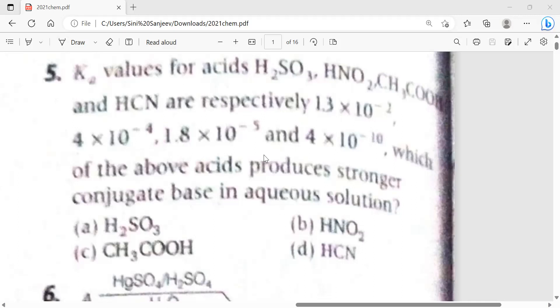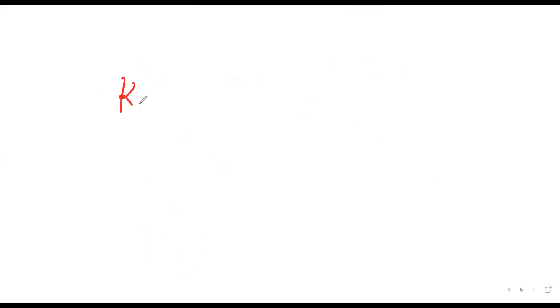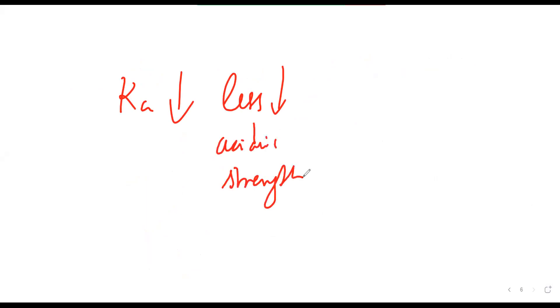The correct answer is option D. The key point in this question: if the Ka value is less, the acidic strength is less. Less acidic strength means a stronger conjugate base will be produced.